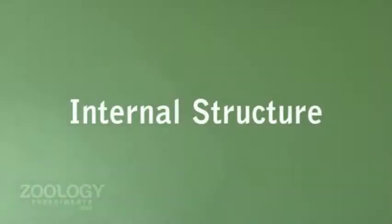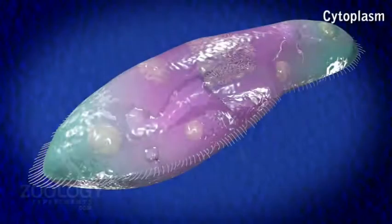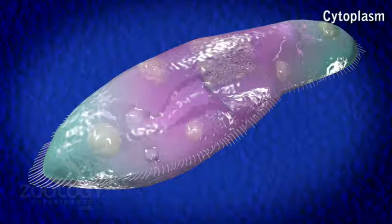Internal Structure. The cytoplasm of the body is clearly differentiated into two regions.